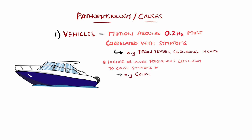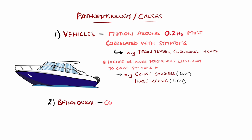Examples of low frequencies would be on cruise carriers, and high frequencies being riding a horse. Some behavioural components can perpetuate the symptoms, mainly those causing conflicting inputs from the visual and vestibular systems, the classic example being reading in a moving car.